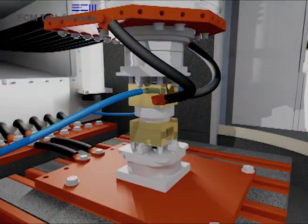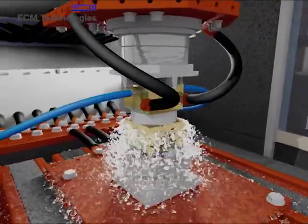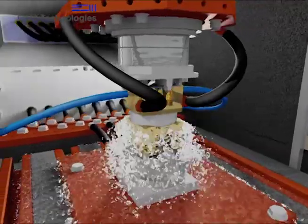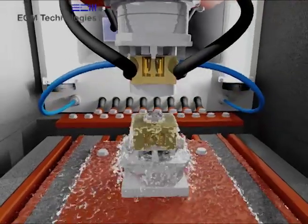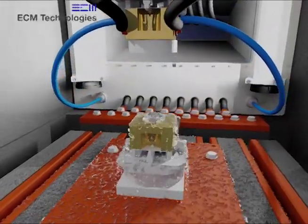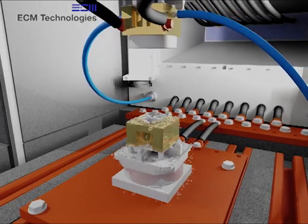We call the tool that is used to machine a product via ECM an electrode, or a cathode. This electrode has the inverse form of the desired end product and does not wear during the process. The material used for the electrode does not have to be harder than the workpiece either, because it makes no contact with the workpiece, electrically or mechanically.